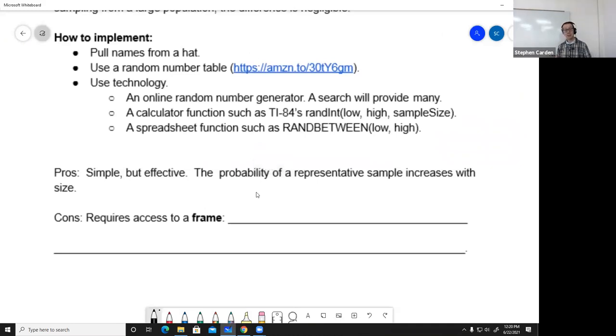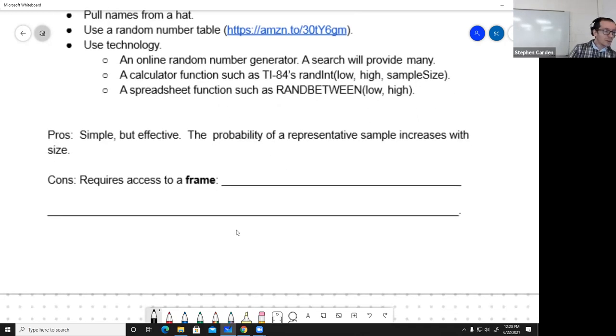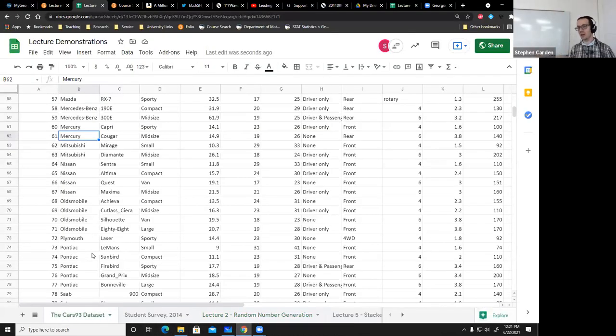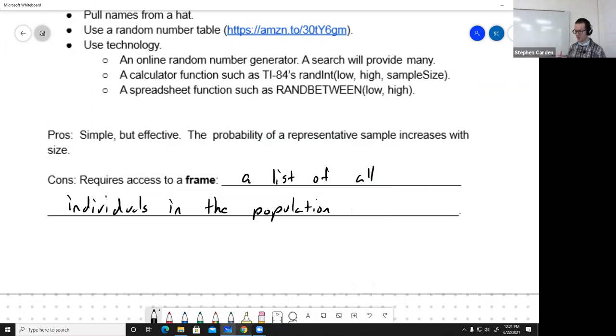What are the pros of simple random sampling? It is simple but it's effective. According to the law of large numbers, the probability of a representative sample and good accurate estimates will increase with sample size. The only bad thing about this is we require a frame. A frame is a list of all individuals in the population. Obviously if I'm going to put names in a hat, I can't do that unless I know all the names. I can use that random number generator, but that doesn't really help if I don't already have a list of all the individuals in the population. To do simple random sampling, it does require a lot of knowledge about the population. In a minute we'll see a different method that can kind of get around that limitation.